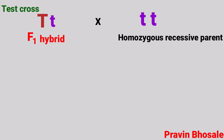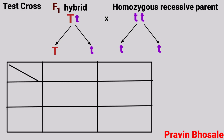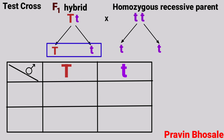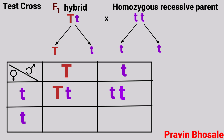Here there will be two types of gametes: capital T and small t. And here will be small t, small t. Let's do the crossing by the checkerboard method. Here, this will be male — capital T, small t — and here will be female — small t, small t. On crossing, we get capital T small t, then small t small t, then capital T small t, and small t small t.